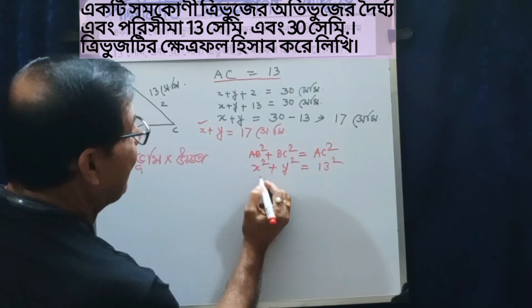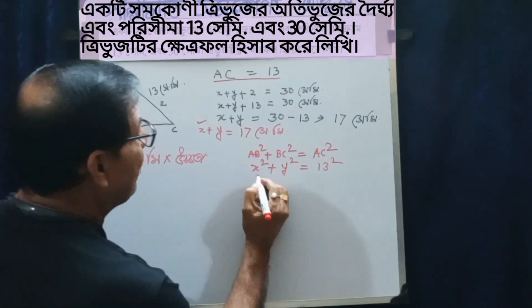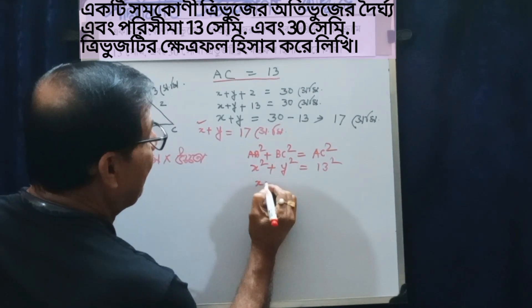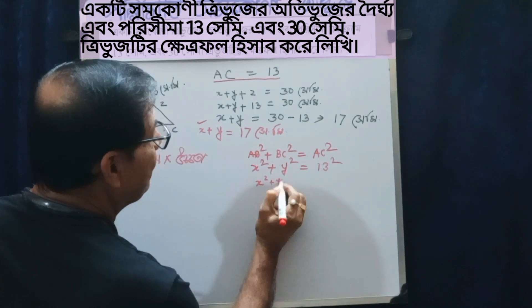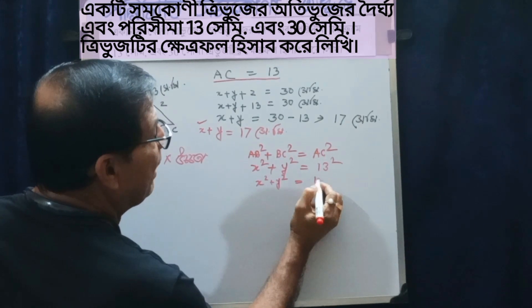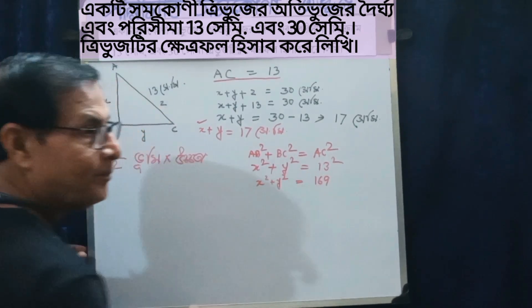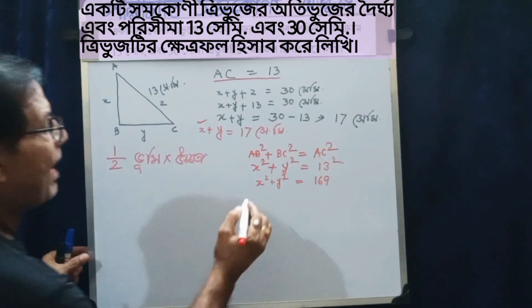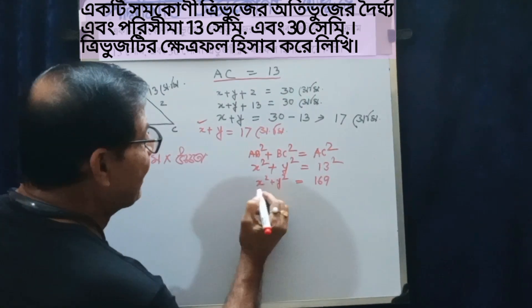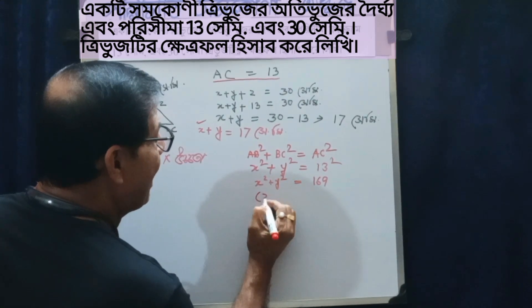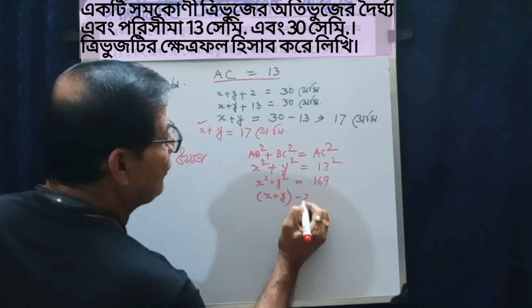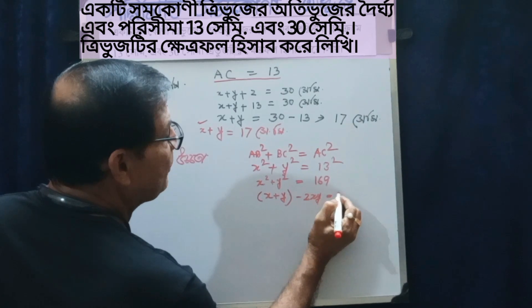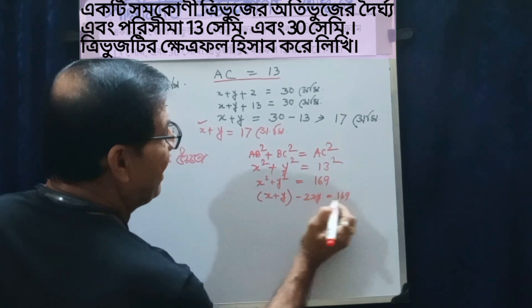x square equal to 169. So we can write: x square plus y square, we can write x plus y minus 2xy equal to 169.